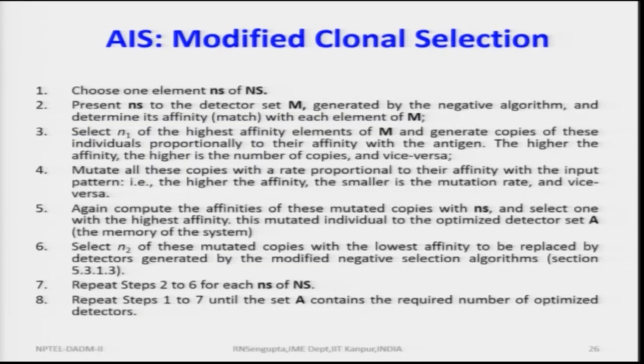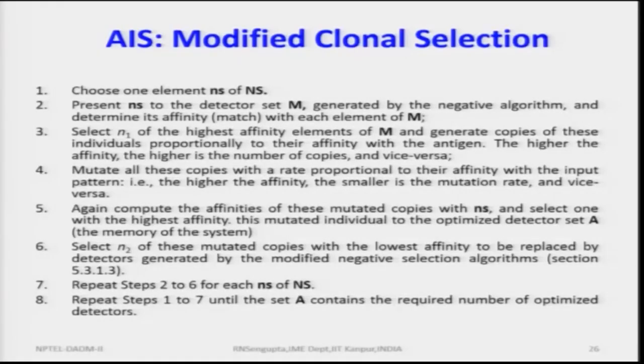In the modified clonal selection model, you choose one element, small ns, from the non-self set capital NS. You present ns to the detector set in M — if it is non-self, it triggers detection. The detector set is generated by the negative algorithm, meaning those elements are further away with no matching, while positive means they are matching — complementary parts generated by the negative algorithm with affinity levels R1, R2, R3.